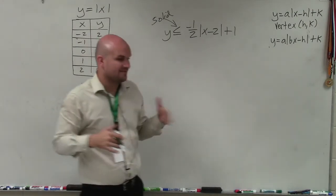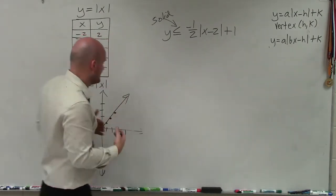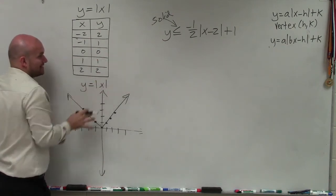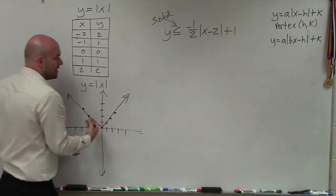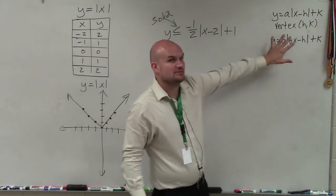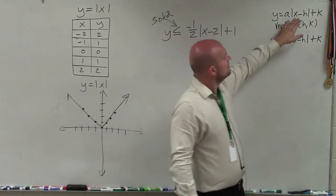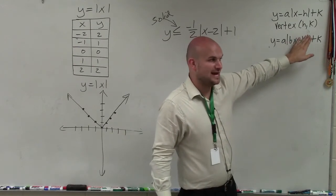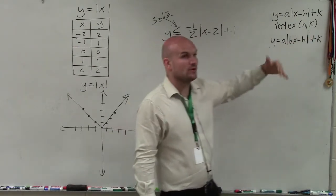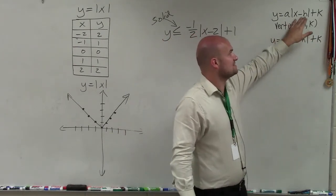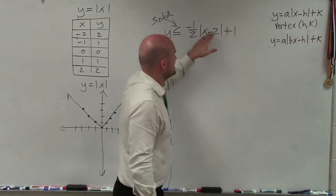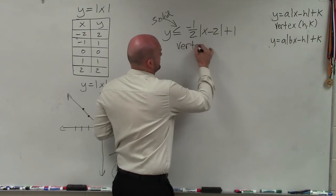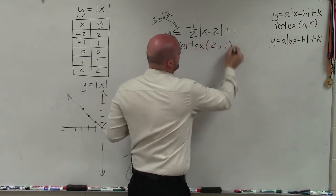The next thing we want to do is identify what are our transformations. How are we going from our parent graph? What is all that negative 1/2, minus 2, plus 1 doing to our graph? So we have to look to our transformations equations, where we say that when we have an equation like this, the vertex is now (h,k). We need to make sure we understand what the value of h is. Remember, it's x opposite of h. So this is x opposite of 2. Therefore, my vertex is now at (2,1).